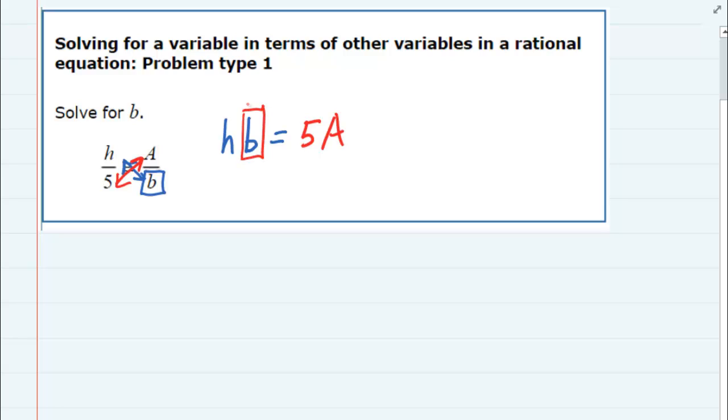So now to solve for b, the only thing left to do is to get rid of the h so that we have the b by itself. And to undo multiplication, we need to divide.